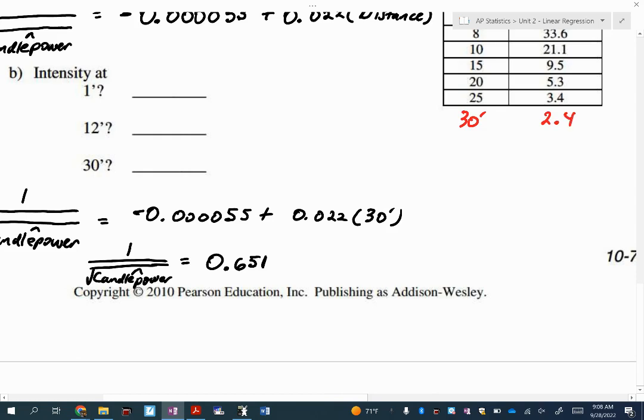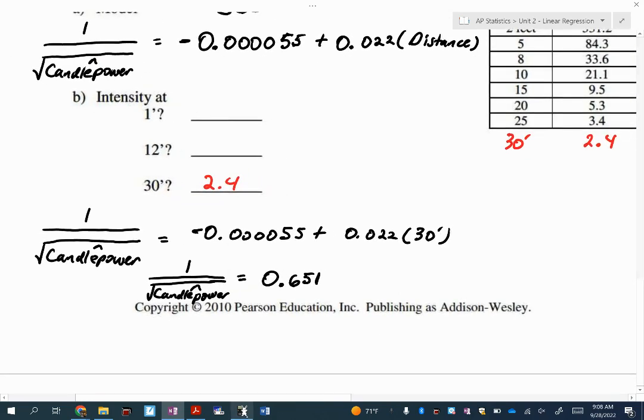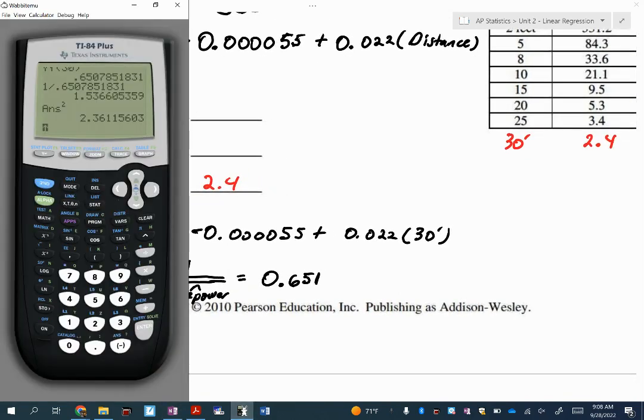Let's do it a little quicker for 12 feet and one foot. So vars, y vars, and now I'm evaluating it at 12 feet. I'm going to do the same work I just did. So one divided by that, and then I want to square both sides, so square it, which gives me 14.8.